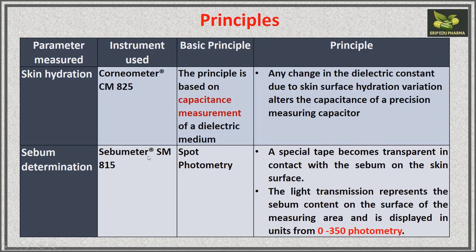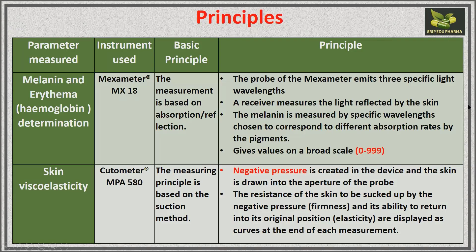Sebum determination is done with the sebometer. Sebum means lipid, and a spot test is generally used for lipid determination — similar to how butter paper shows a spot when lipid is present. In the sebometer, a special tape comes in contact with sebum and becomes transparent. The light transmission represents the sebum content on the surface of the measuring area, displayed in units from 0 to 350 by spot photometry.